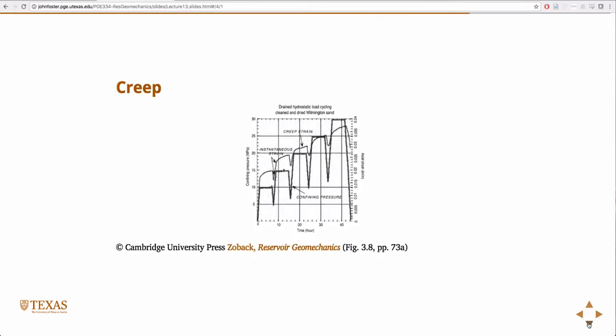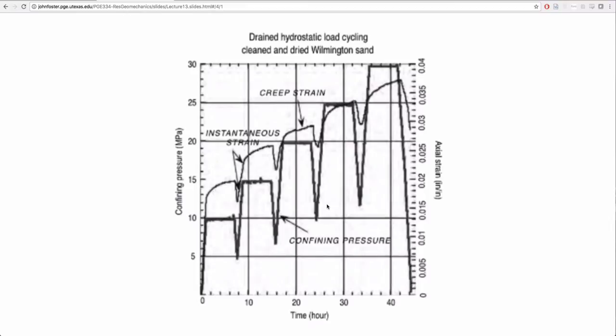And so here's an example of real material on basically cleaned and dried or fired sand. So this line here is the load cycle, so there's an axial strain being applied, it's about a little less than one, a little more than one percent strain, and then it's held fixed for some time and the stress is measured.